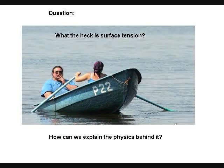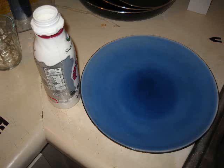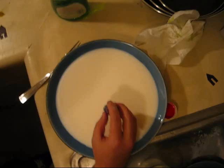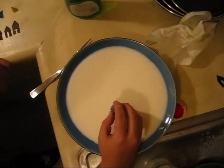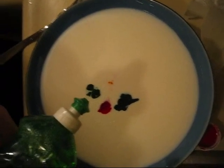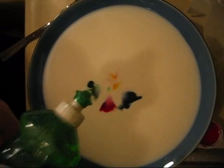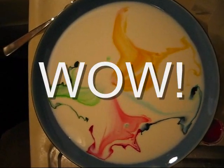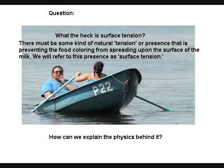What the heck is surface tension? How can we explain the physics behind it? Using ordinary milk in a regular plate and some food coloring, pour the milk onto the plate until it's about full. Place drops of food coloring onto the surface of the milk. Notice that the food coloring doesn't flow freely because there must be some kind of natural tension preventing it from spreading on the surface of the milk. We will refer to this presence as surface tension.